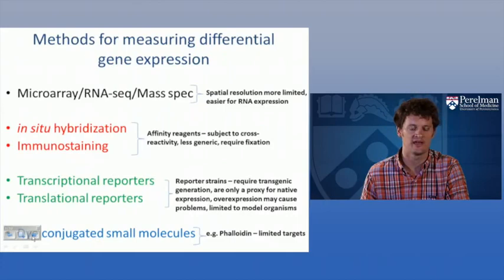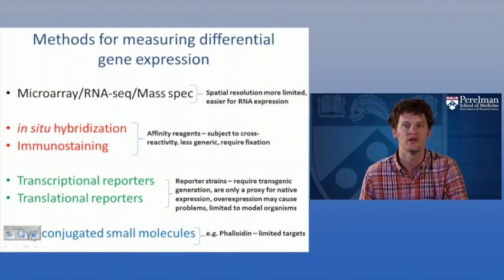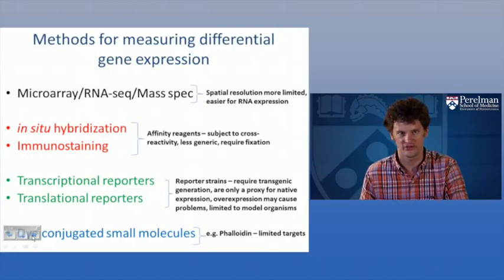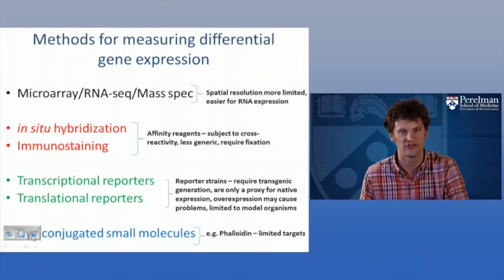We'll talk briefly about some of the traditional methods for measuring gene expression differences between cells, populations, organisms, and conditions. People spend a lot of energy thinking about microarray methods, RNA-seq more recently, and mass spec as ways to take a large sample, grind it up, and look at which genes are expressed in that sample. That's great, but it has pretty limited spatial resolution unless you go to really extreme lengths, and single cell methods also have substantial limitations and are pretty cumbersome.